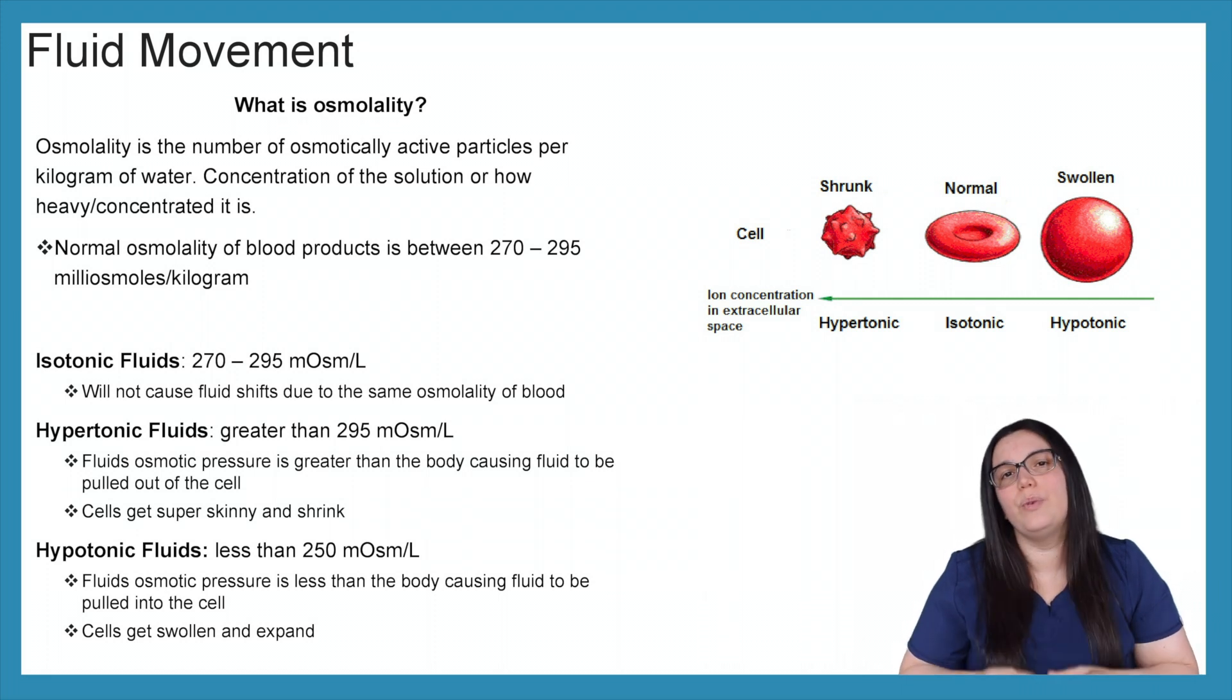We have three different kinds of solutions: isotonic fluids, hypertonic fluids, and hypotonic fluids. Isotonic fluids have an osmolality between 270 and 295. We know that there won't be any kind of fluid shifts due to the same osmolality of blood as with our isotonic solutions.